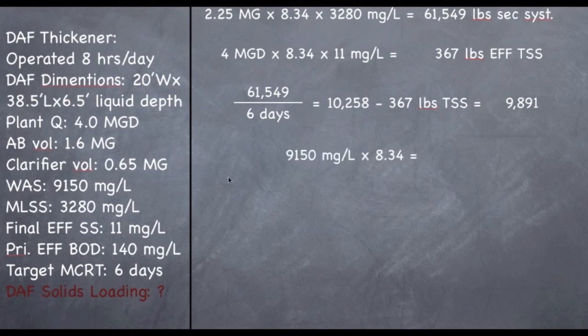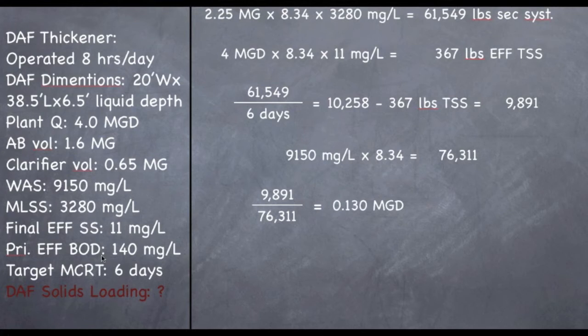Now let's find out the next part of the problem to find out our MGD wasting rate, which is the WAS concentration times 8.34. So, 9,150 times 8.34 equals 76,311. Now, all we have to do is divide 9,891 by 76,311, and what we are going to get is 0.13 MGD. So, we are wasting 130,000 gallons per day. That was one grade 3 problem.